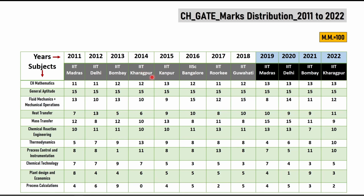IIT Roorkee and Guwahati have some of the easiest papers. IIT Roorkee organized the 2017 exam and the topper marks were more than 90 with a cutoff above 40 — one of the easiest papers ever. After 2018 they started organizing the GATE exam again in the same sequential order. Following that sequence, IIT Kanpur is going to organize the 2023 paper.